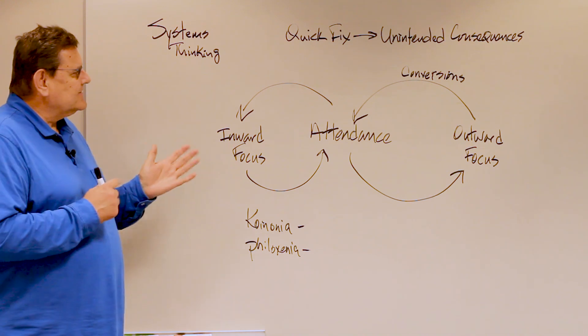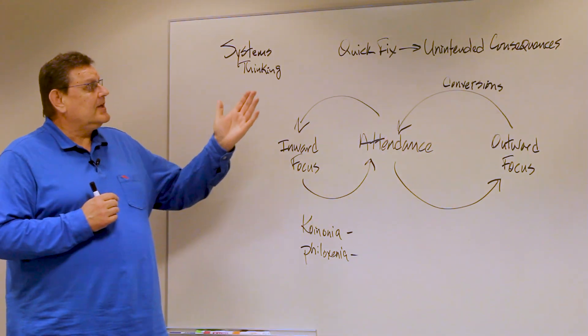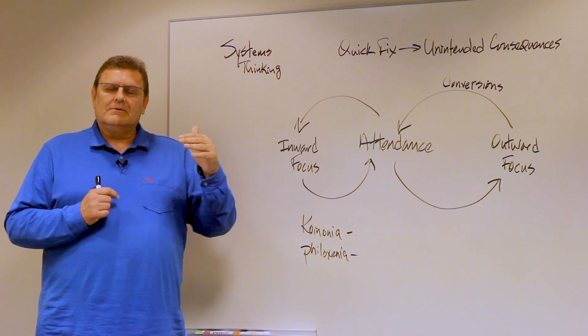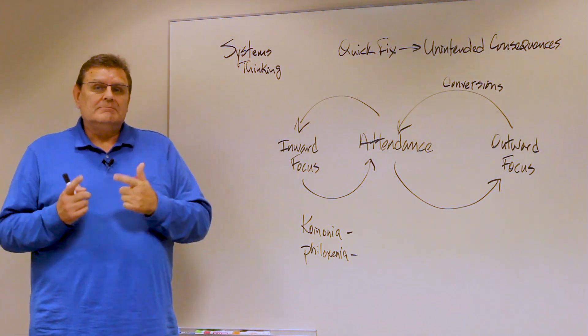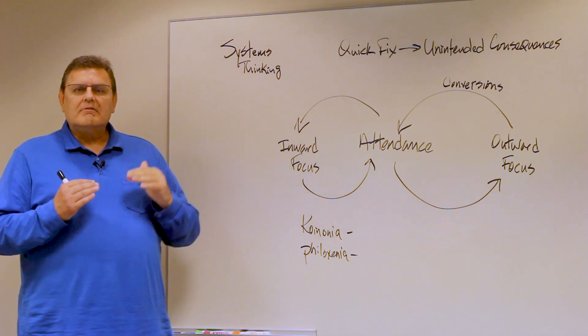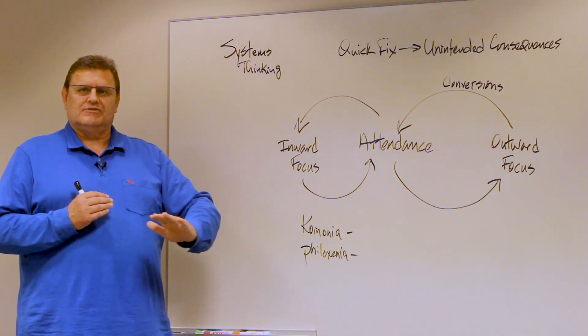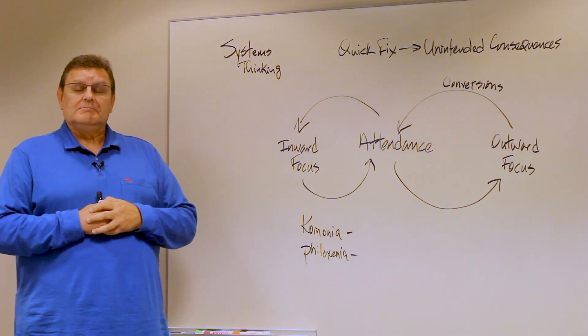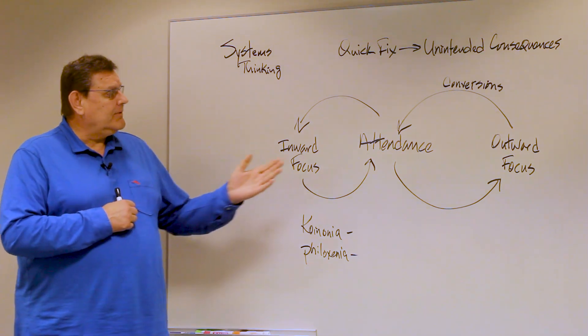So let's take an example of how this works. Because when the system is producing outcomes that we don't appreciate, sometimes it's because we have reacted at the level of events rather than getting below the surface to the structure and our mental models. And an example would be, what about church attendance?